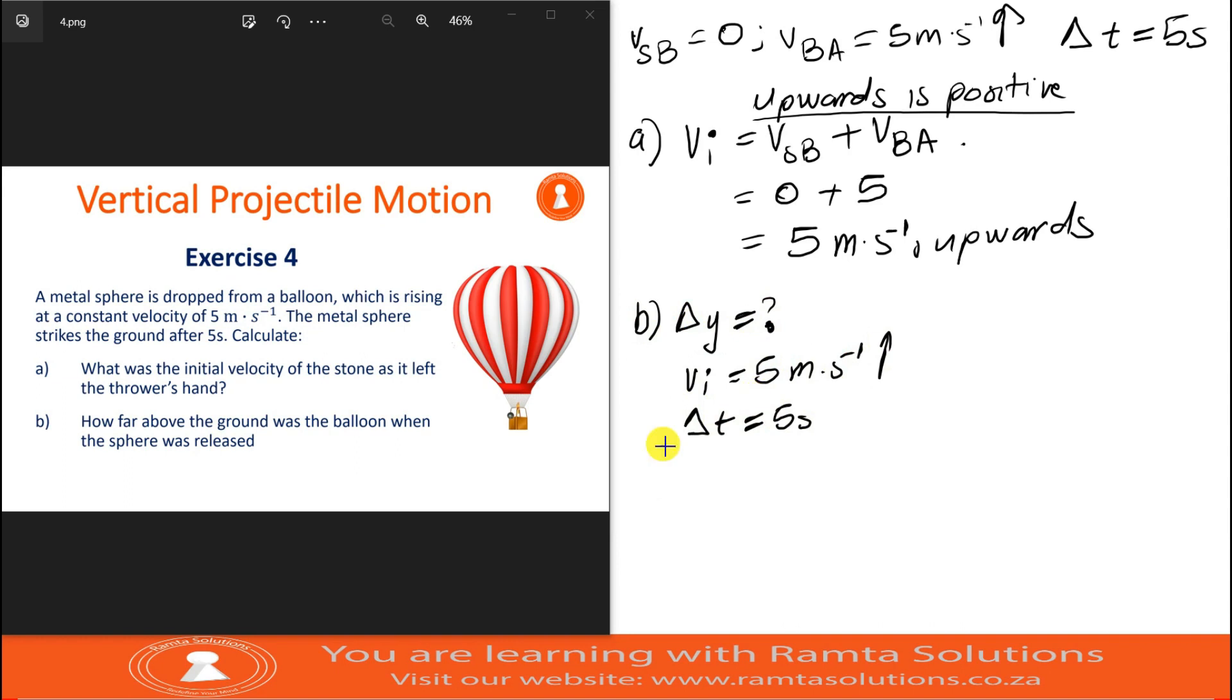We are looking for delta Y. We will use the equation delta Y equals V_I delta T plus half A delta T squared. I'm still choosing upwards as positive.